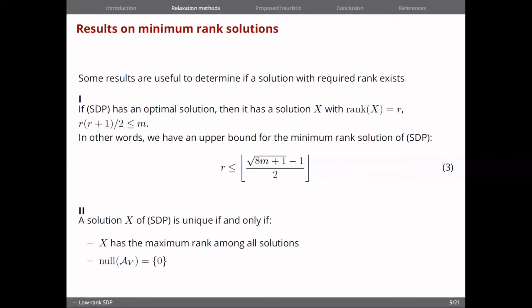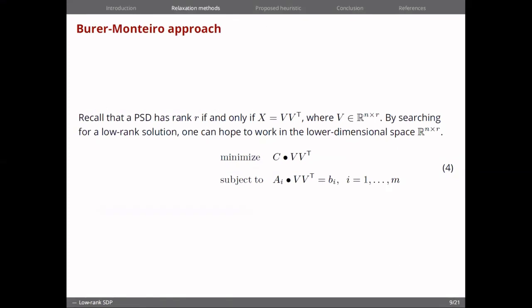Now let's look at the second category of approaches which maintains low rank throughout the entire algorithm. Other class of methods are Burer-Monteiro-based methods, in which the idea is to factor the decision variable as V times V transpose, where V now lies in this lower dimensional space.